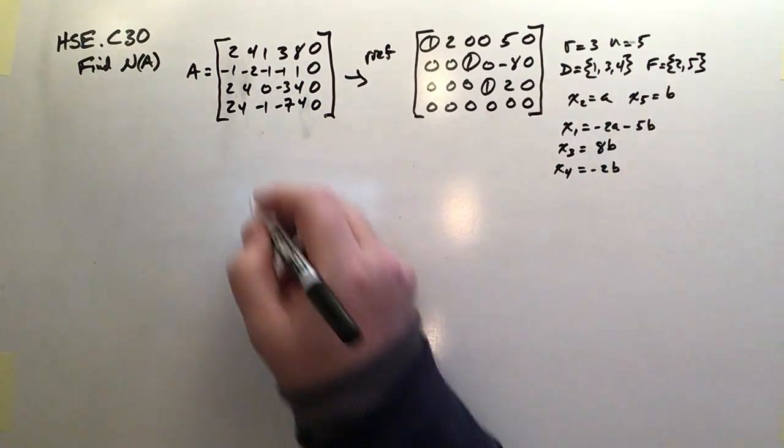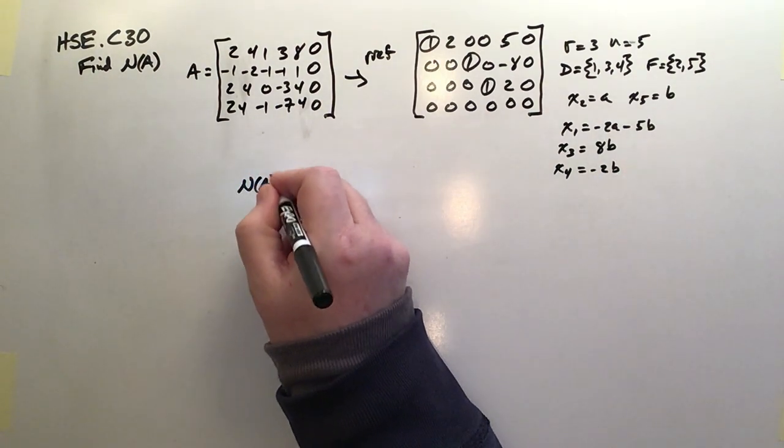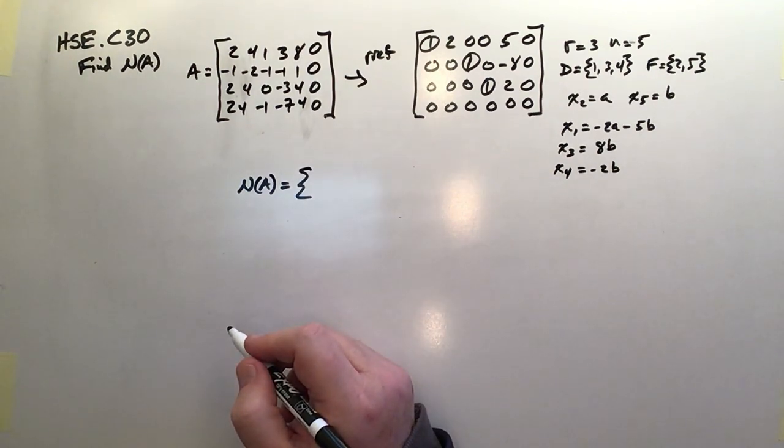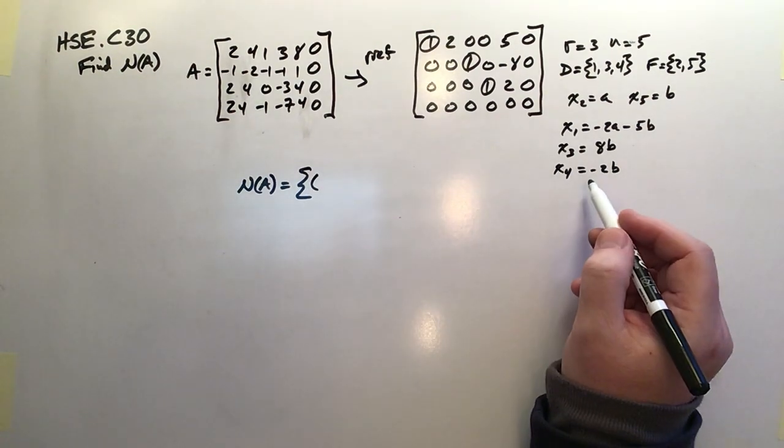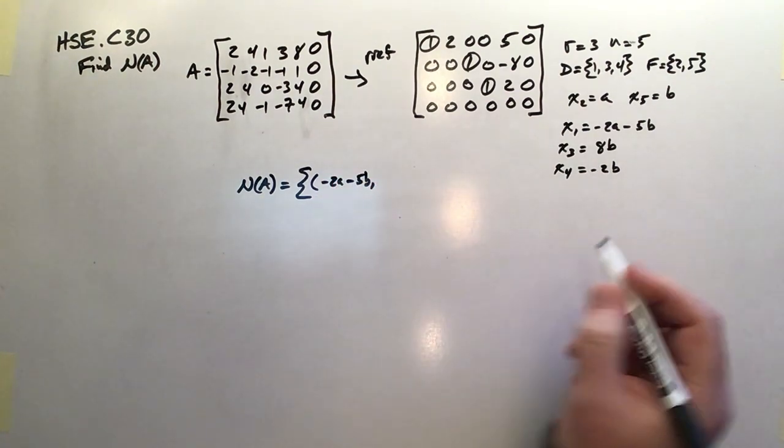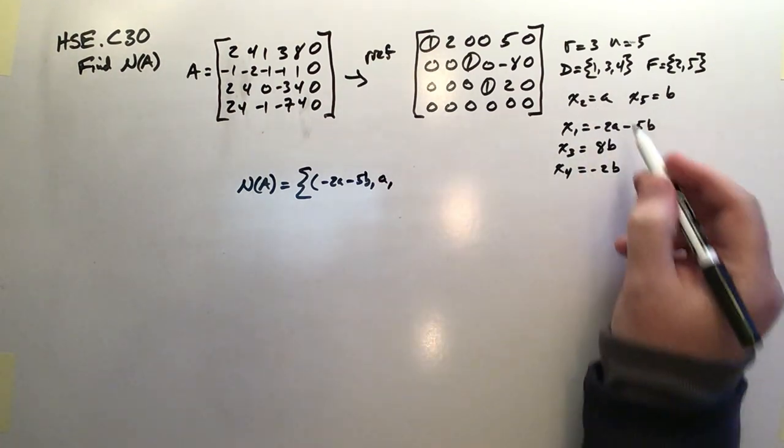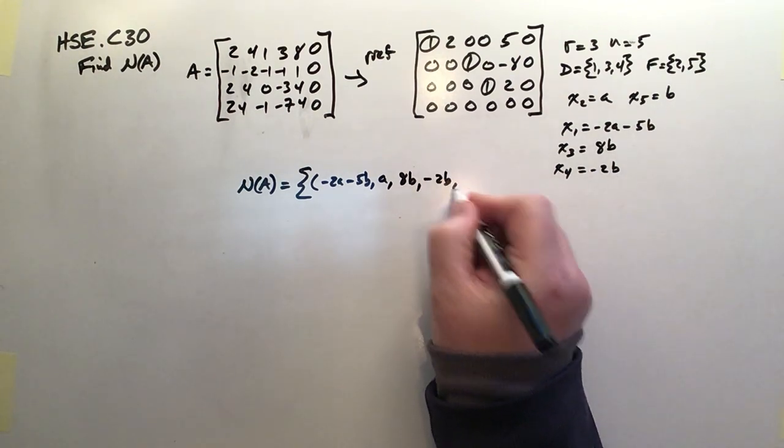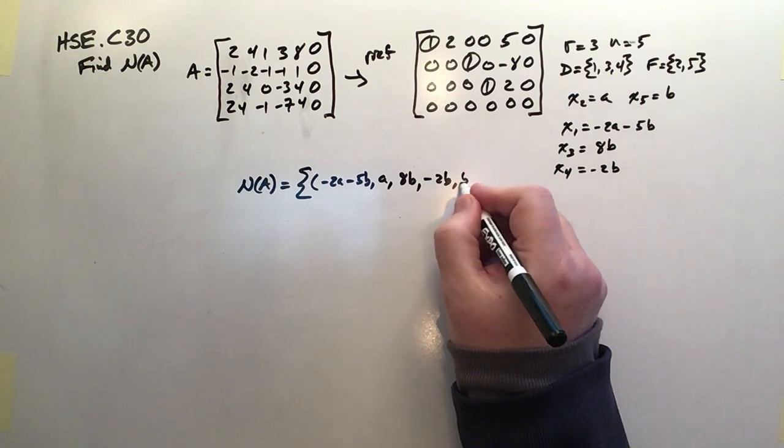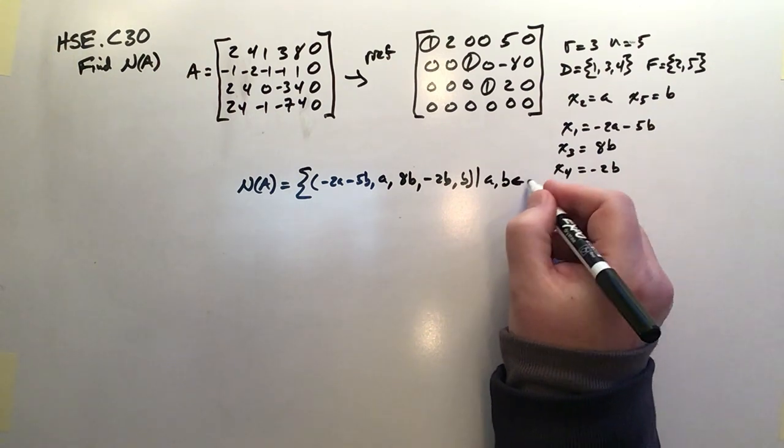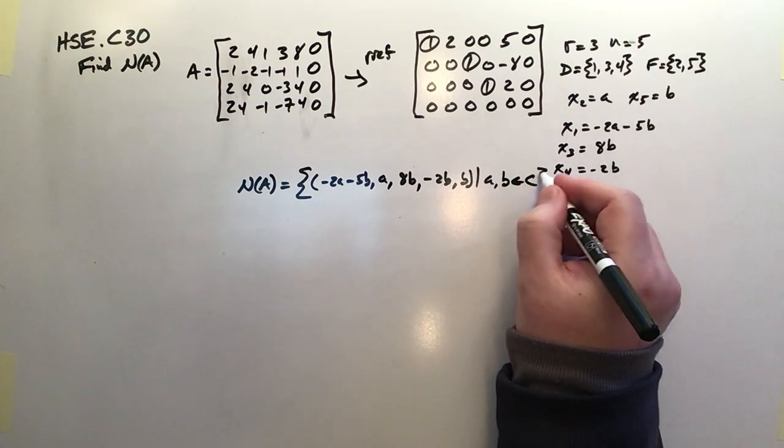So there is our null space for vector A is going to be equal to this particular set. And the set is going to be x1, negative 2A minus 5B. x2 is A. x3 is 8B. x4 is negative 2B. x5 is B. And that's assuming that A and B are both elements of the complex number set.